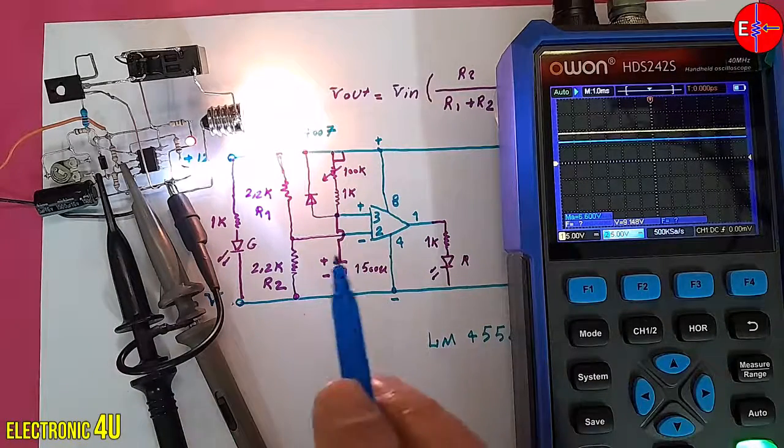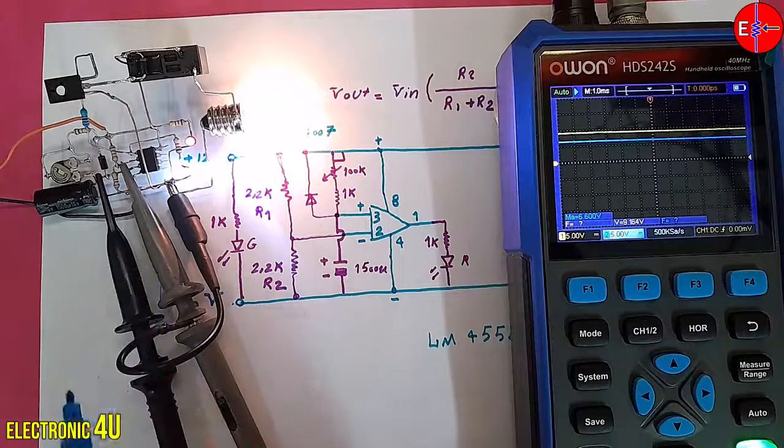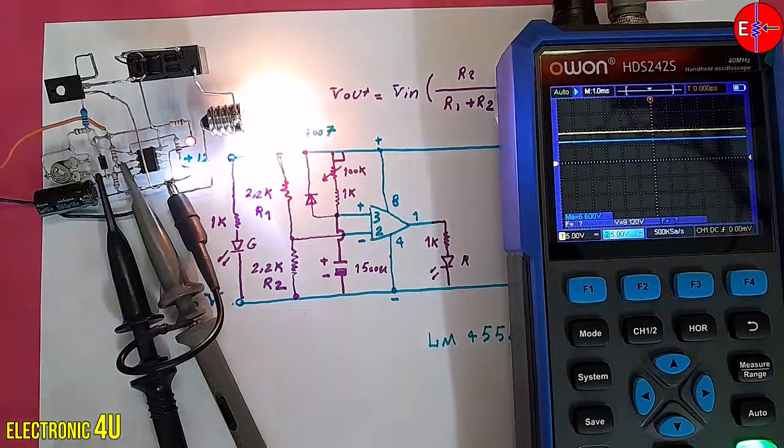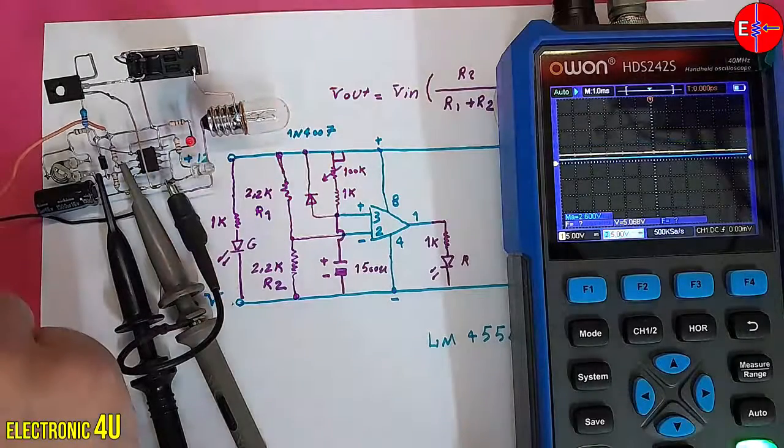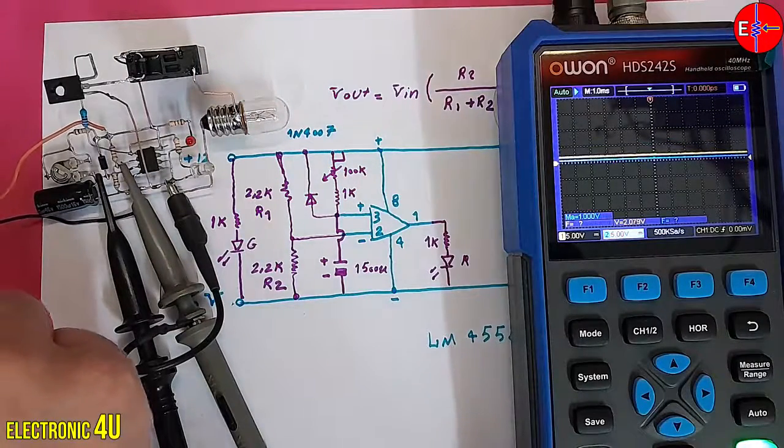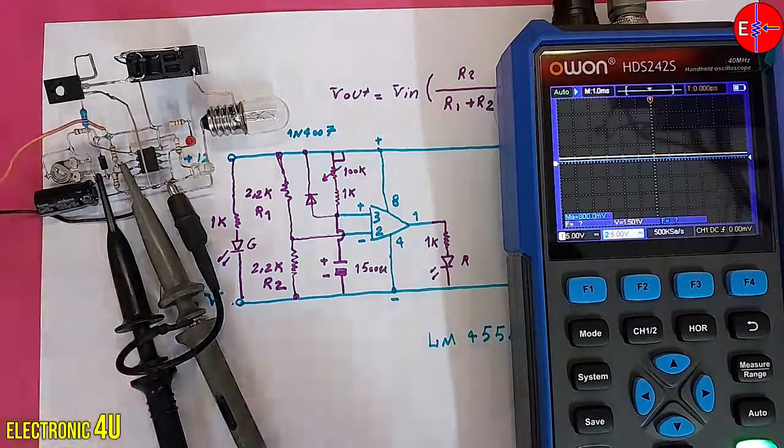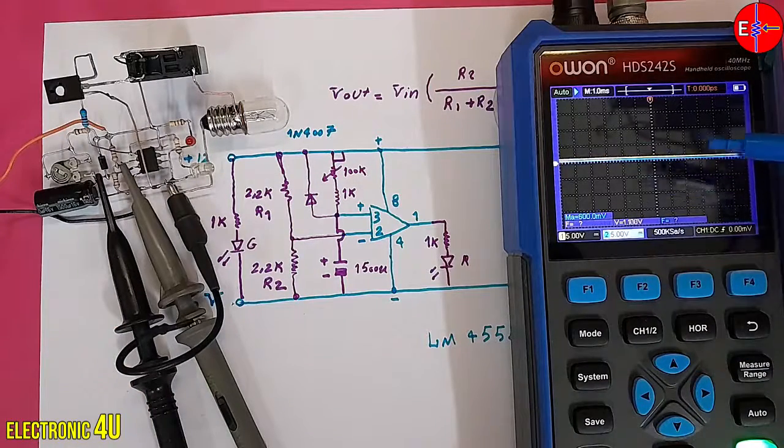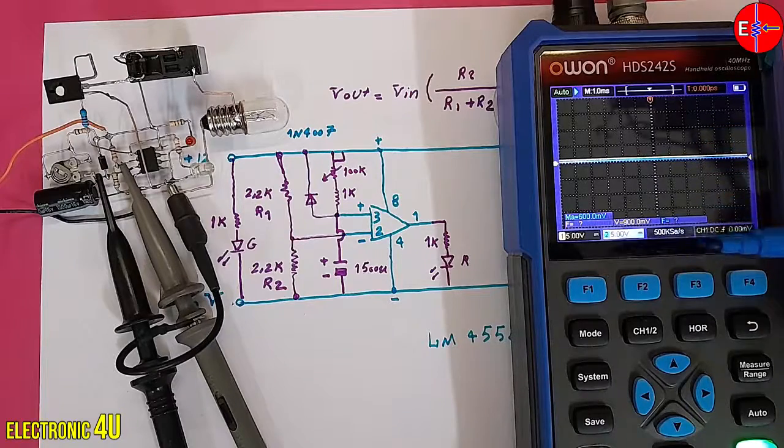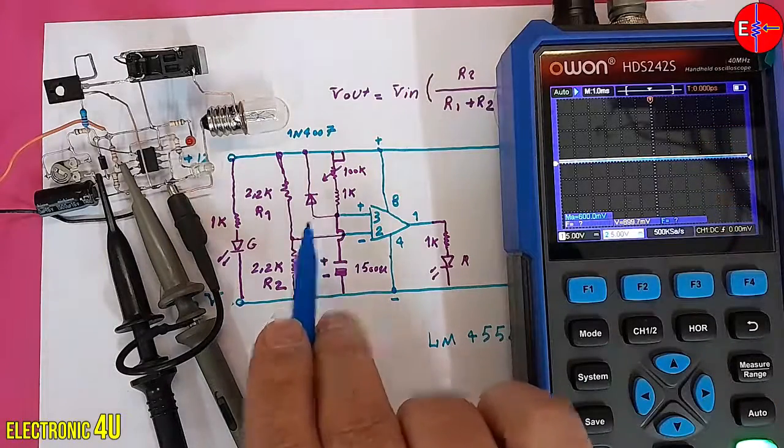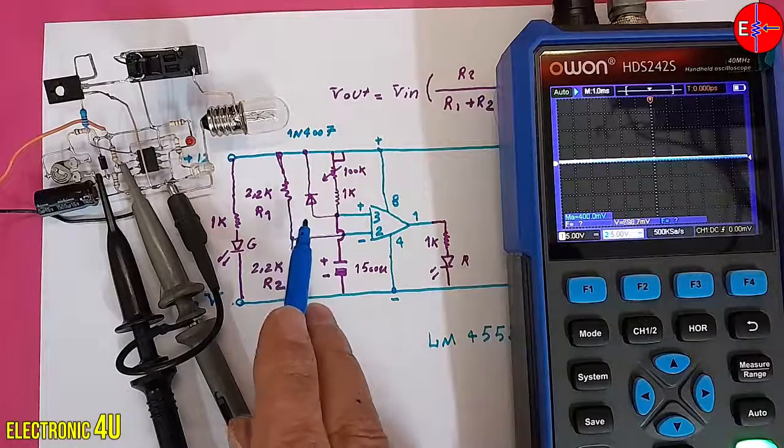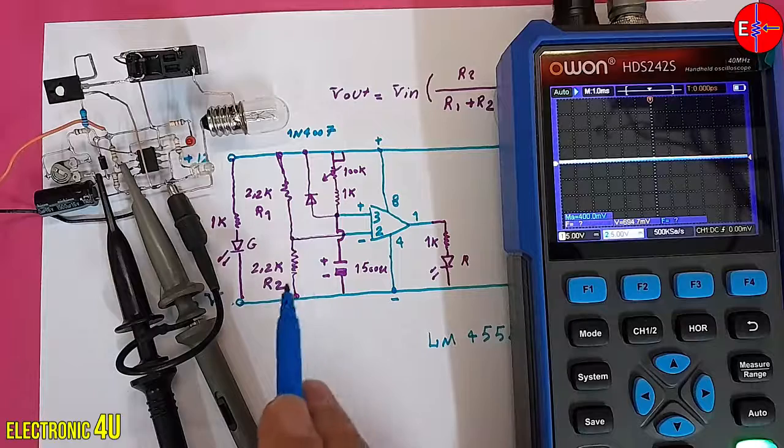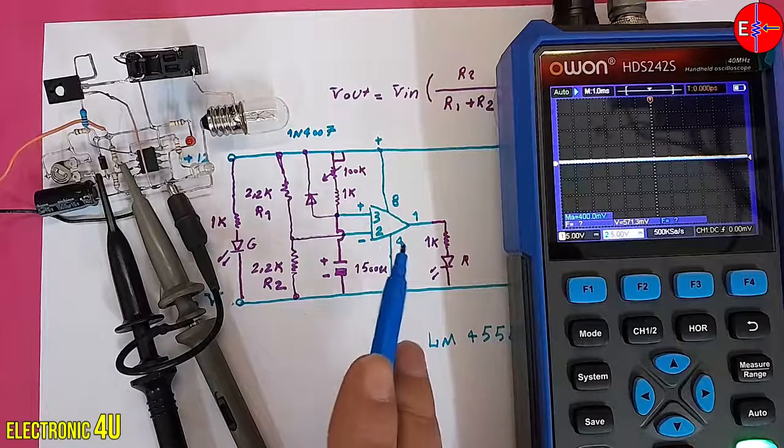Now, I am going to disconnect the input voltage. Pay attention to the oscilloscope to see what happens. As you can see, the yellow line representing the capacitor voltage quickly decreases. This is accomplished with the help of the diode. If we don't place the diode in this section, the capacitor will discharge slowly and the op-amp output will remain active.